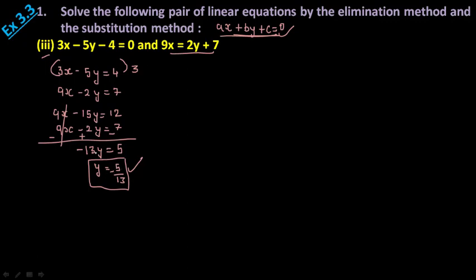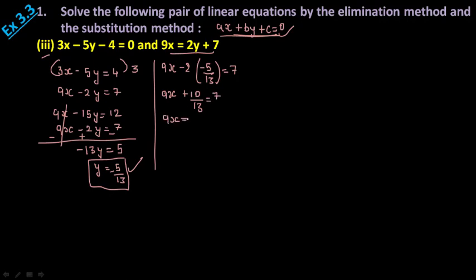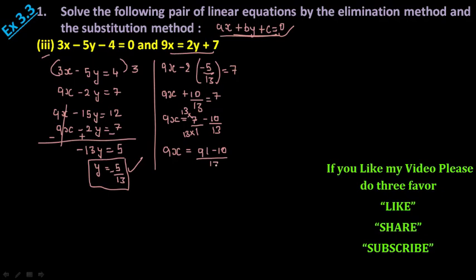Now keep y = -5/13 in the second equation: 9x - 2(-5/13) = 7, so 9x + 10/13 = 7. Take 10/13 to the other side: 9x = 7 - 10/13. Taking LCM of 13: 9x = (91 - 10)/13 = 81/13. Divide both sides by 9: x = 81/(13 × 9) = 9/13. So x = 9/13.